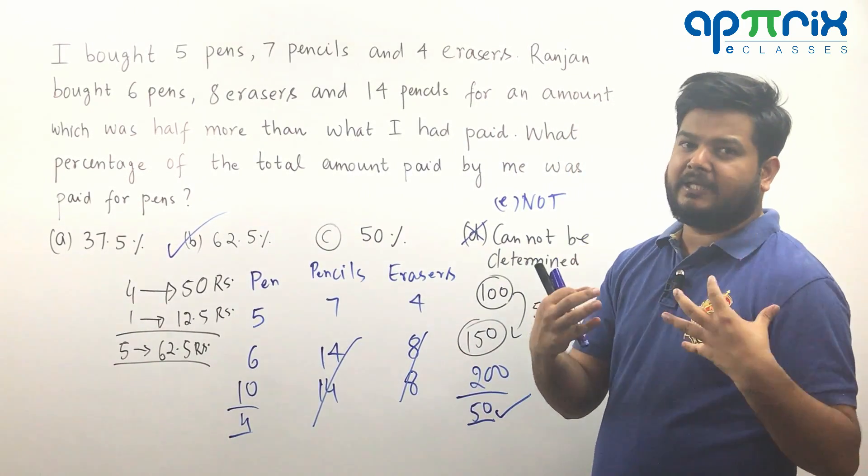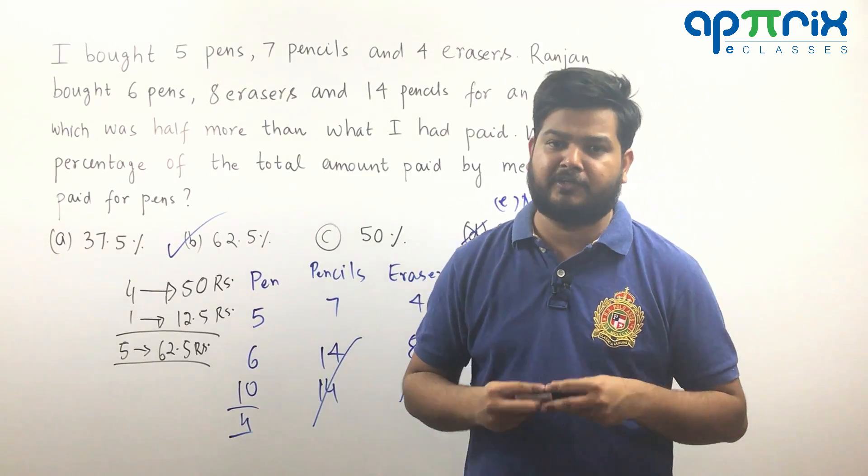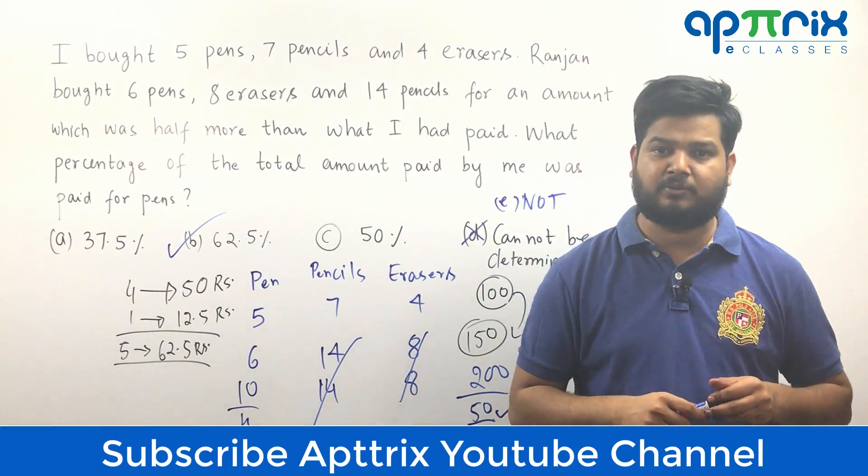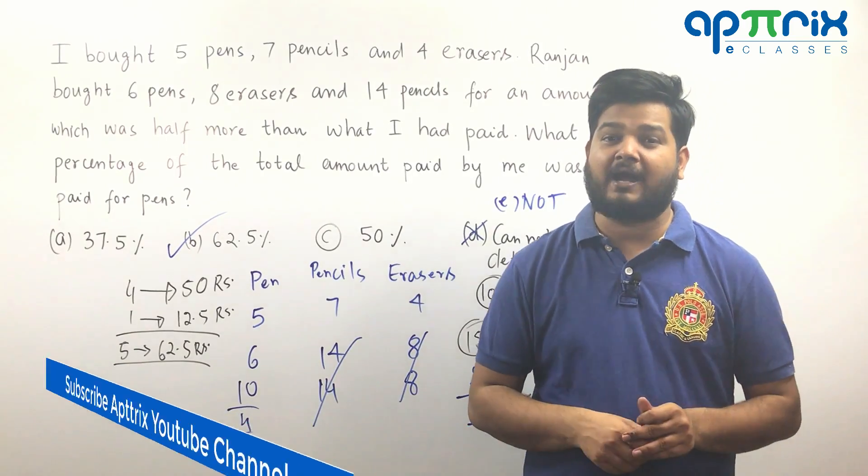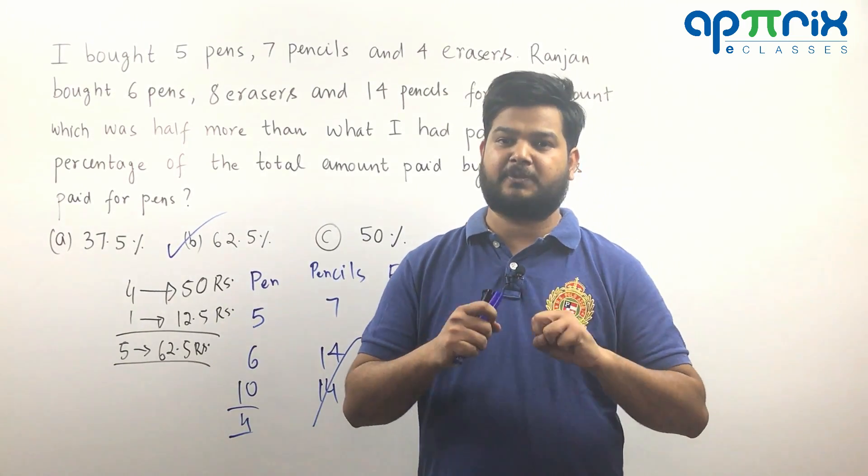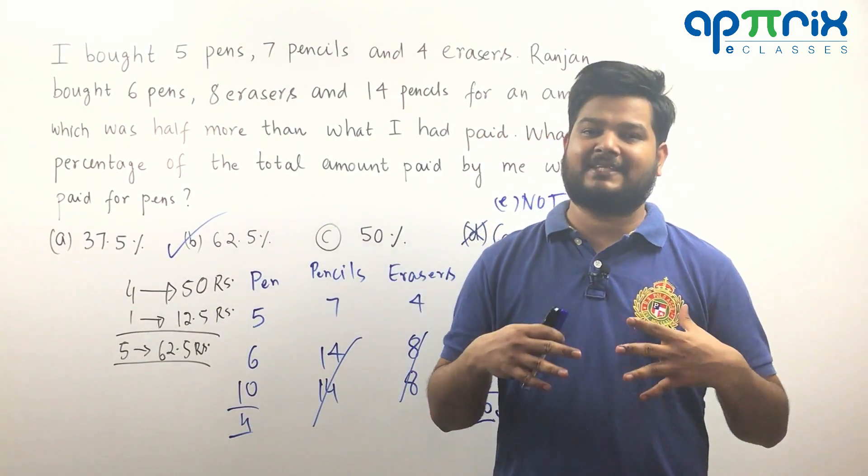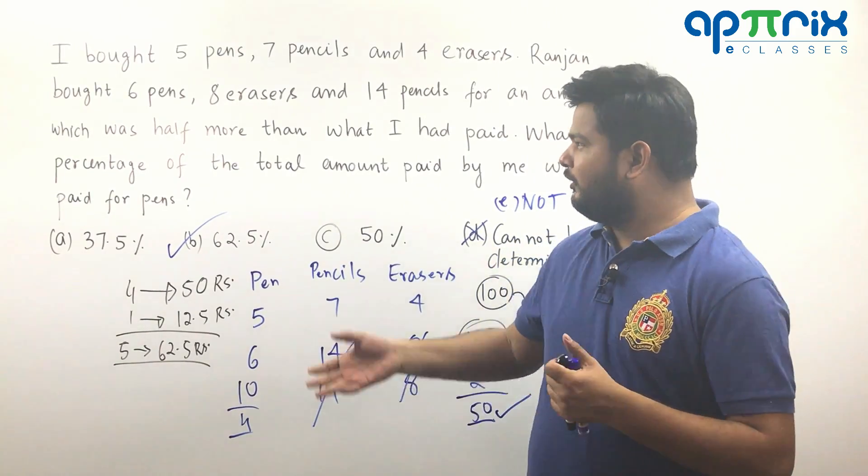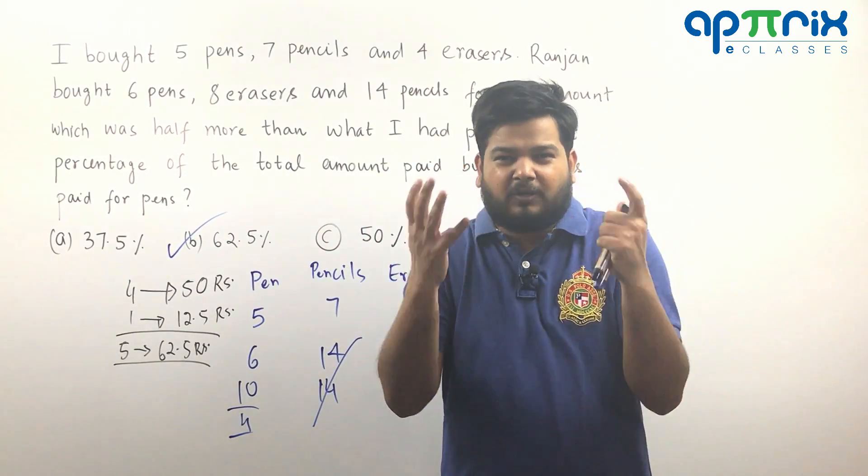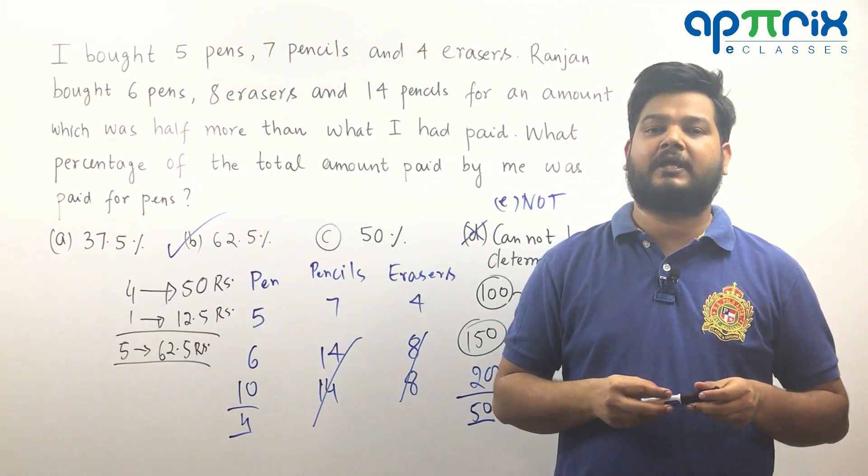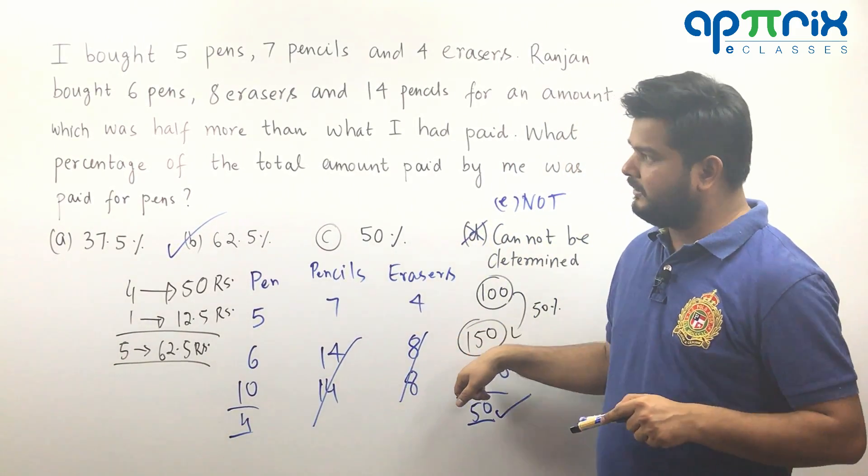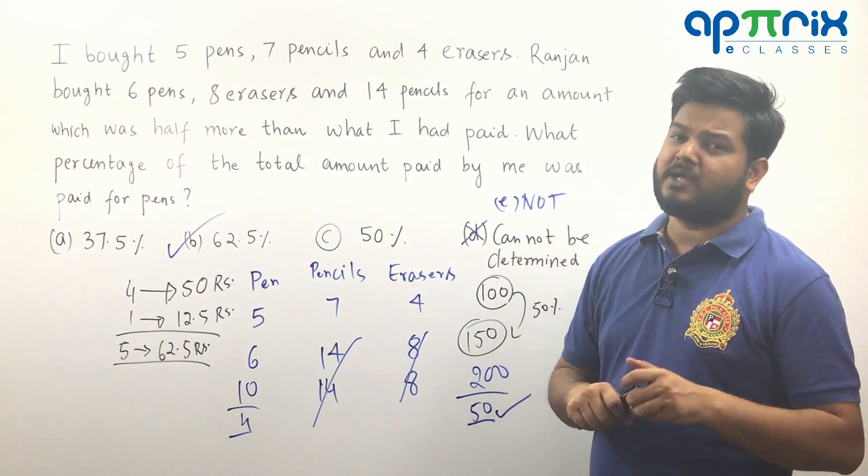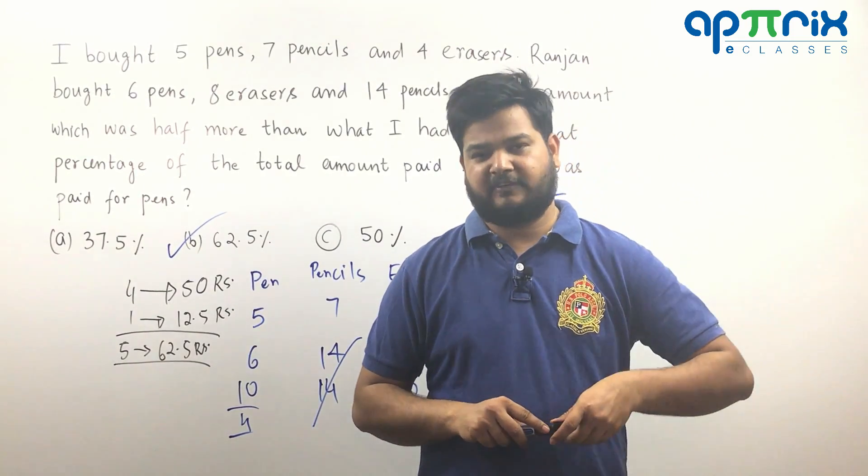So you know whenever you are doing any question it is very important. First when cannot be determined is going to be given, do not be immediately prompted to mark it until and unless you are 100% sure that the given data is insufficient to solve it. So although initially in this question it looked like that you are going to get answer to be cannot be determined but that is not correct. It can be calculated. It's a wonderful question and I think you must note it down in your notebooks for the revision so that you will never go wrong if such questions come in the exam.